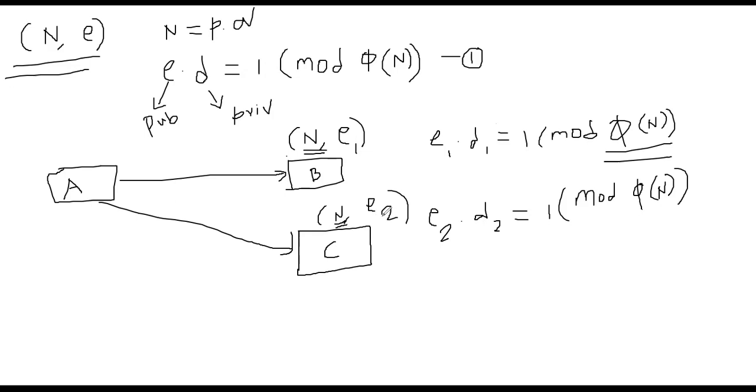So why is this vulnerable? Can Bob attack Charlie and Charlie attack Bob? It turned out that is possible. I will explain an algorithm now.